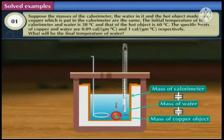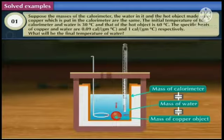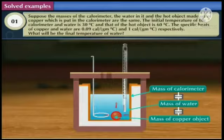Suppose the masses of the calorimeter, the water in it, and the hot object made up of copper which is put in the calorimeter are the same. The initial temperature of the calorimeter and water is 30 degrees Celsius and that of the hot object is 60 degrees Celsius. The specific heat of copper and water are 0.09 calorie per gram degree Celsius and 1 calorie per gram degree Celsius respectively. What will be the final temperature of water?